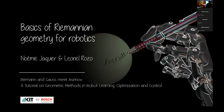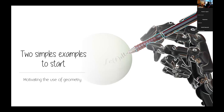Let's get started with the first session of the day, which is basically about basics of Riemannian geometry for robotics. This is the first part of the basics that we're going to explain. Let me get started with two simple examples to motivate why we are doing this. I would like us to be all on the same page regarding why this could be relevant for any of us.